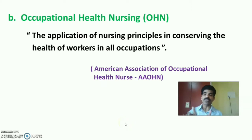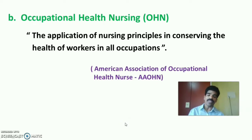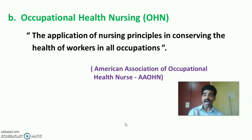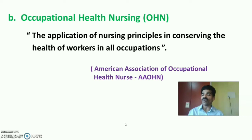The second definition relates to Occupational Health Nursing (OHN). According to the American Association of Occupational Health Nurses (AAOHN), occupational health nursing is defined as the application of nursing principles in conserving — that is, protecting and promoting — the health of workers in all occupational settings.